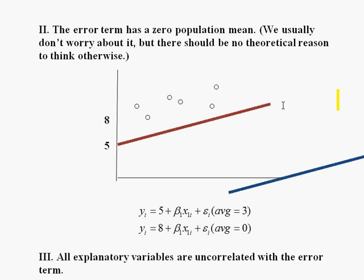To be honest, I've never come up with a good example that makes sense where this should be the case — why should the correct line under-predict the observed data by three? I'm not sure exactly what that kind of situation would look like. But this is what a graph would look like: the line you use to predict is consistently, on average, three below where the data is on average. So what is going to happen if you use ordinary least squares to estimate this relationship?